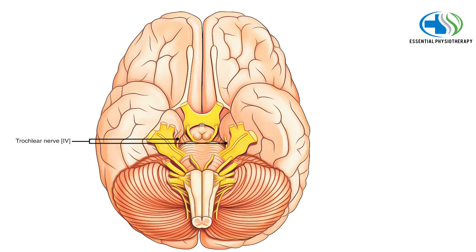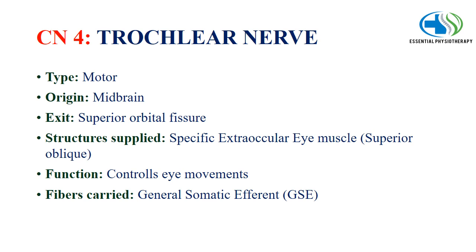Cranial nerve 4 is the trochlear nerve. It is a motor type nerve and has its origin from the midbrain, exiting through the superior orbital fissure. The structure supplied is the superior oblique, a specific extraocular eye muscle, and its function is to control eye movements. The fibers carried are general somatic efferent fibers.